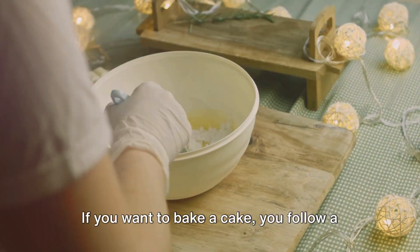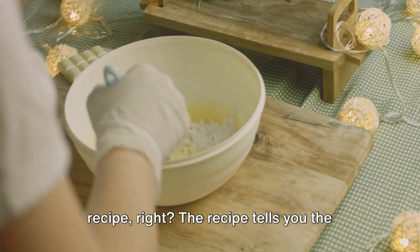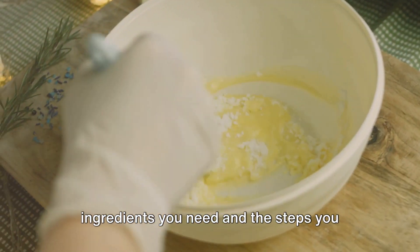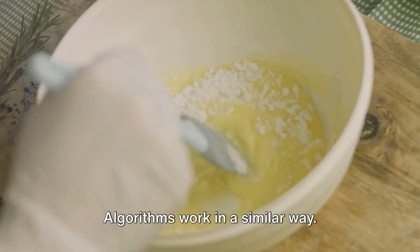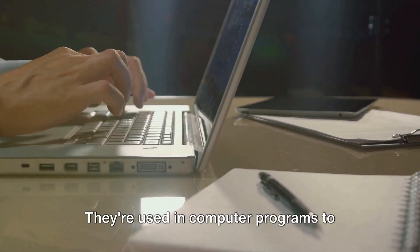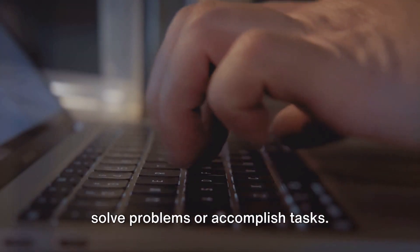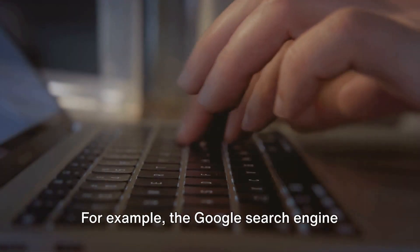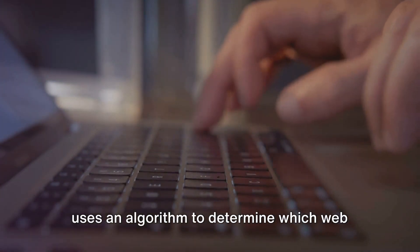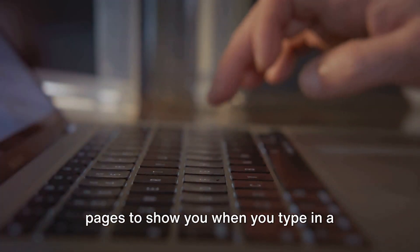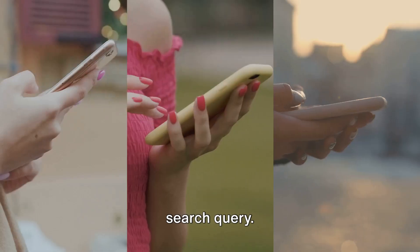Think of it like a recipe. If you want to bake a cake, you follow a recipe, right? The recipe tells you the ingredients you need and the steps you need to follow to bake the cake. Algorithms work in a similar way. They're used in computer programs to solve problems or accomplish tasks. For example, the Google search engine uses an algorithm to determine which web pages to show you when you type in a search query.